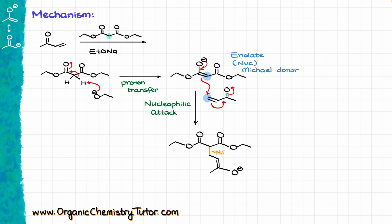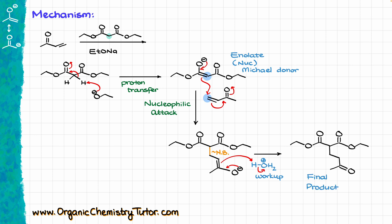The new bond just formed is right here. The last step is the acidic workup — bringing aqueous acid to protonate our enolate, giving us our final product. You can always double-check that you got the correct product by remembering that the Michael addition is always going to give you a 1,5-dicarbonyl. If you count the distance between your newly acquired carbonyl and one of the old carbonyls, it's always going to be a 5-carbon chain.